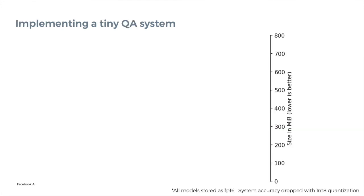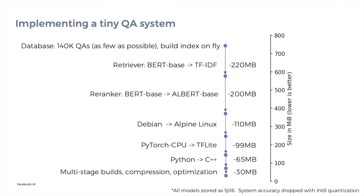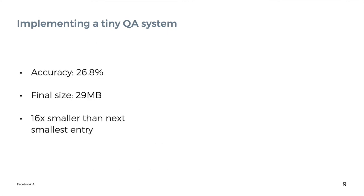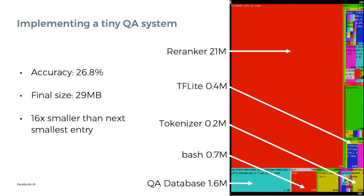To build our smaller system, we use as few QA pairs as possible, and build the index at evaluation time. We replace the original BERT retriever with TF-IDF and use an ALBERT-based re-ranker. We also use Alpine Linux, convert our models to TensorFlow Lite, and implement in C++. We make extensive use of multi-stage builds, compression, and other optimizations. The final model scores 26.8% and is 28 MB, 16 times smaller than the next smallest entry. This image visualizes the file system. The re-ranker takes up 21 MB and the database 1.6 MB, the rest being important binaries and the operating system.